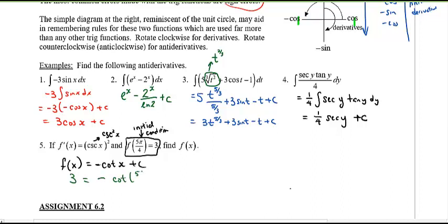So three equals to negative cotangent of 5π/4, and the tricky part is what is the cotangent of 5π/4? Hopefully you remember the cotangent of 5π/4, that's in quadrant three. We have the nice one, one, root two triangle, but the ones are negative because they're in quadrant three.